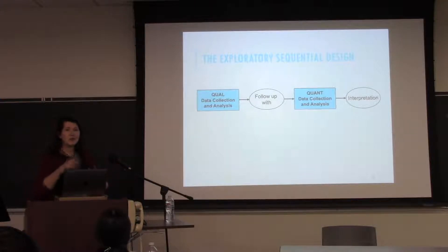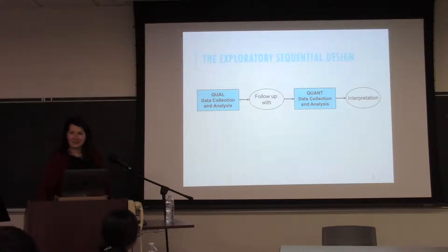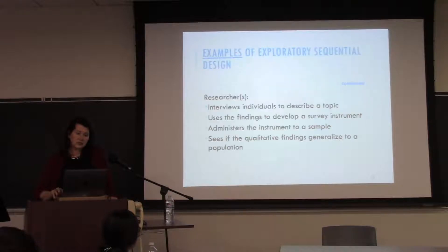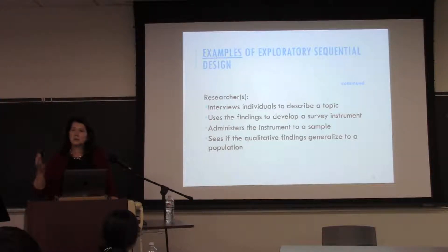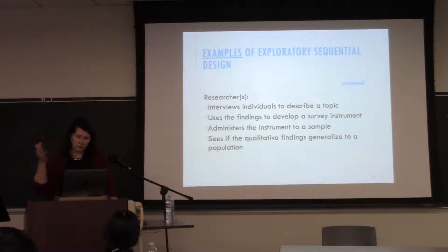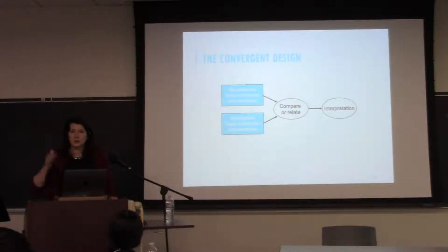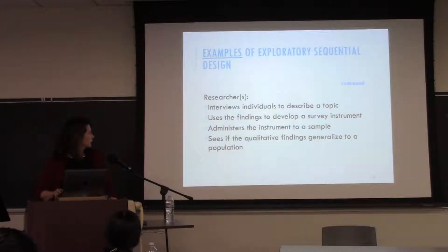An exploratory study flips the order — qualitative comes first. You start with qualitative to understand what kind of research you want to do, or even to adapt a measure for a population. An example: a researcher interviews individuals to describe a topic — say, family separations or caretaker-child diets — to hear what issues come up, and then develops a survey instrument to ask a larger number of people about that experience.